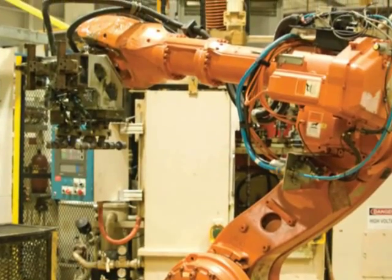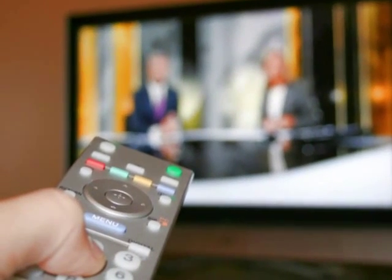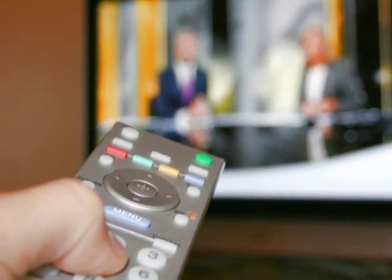Robots can detect and avoid obstacles in their environment and handle objects with precision and care. A TV remote brings convenient control of the television from a distance.